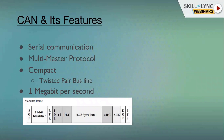Multi-master means any node can be a master at a time, achieved through bit-wise arbitration. With arbitration, CAN allows bus access when a high-priority frame is transmitted. Technically, the dominant bit wins the race in CAN communication.